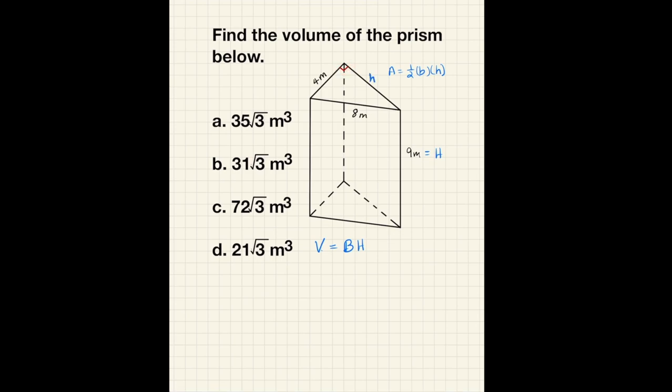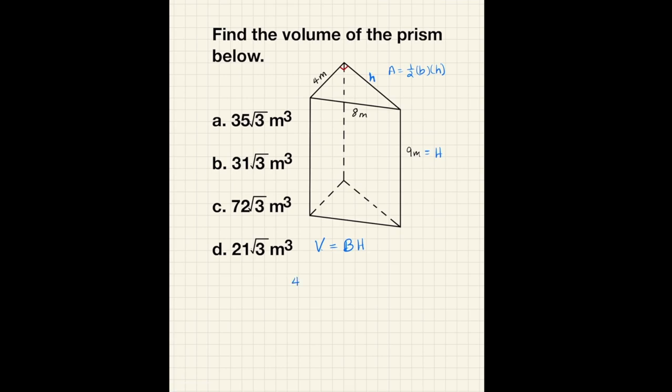This is a right triangle. We can use Pythagorean Theorem to find the height of the triangle. Simply 4 squared plus h squared is equal to 8 squared. We get 16 plus h squared is equal to 64.